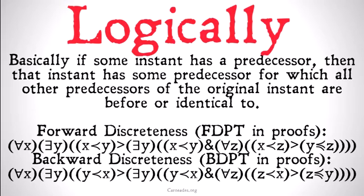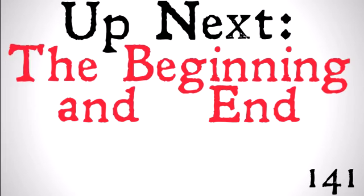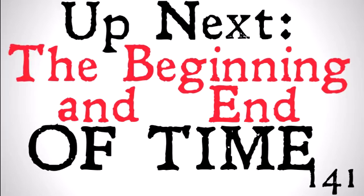Hopefully those logical expressions make sense, or at least the basic ideas make sense. These are going to be very similar to predecessorship and successorship without the stipulation that there must be no end or no beginning. Up next, we've already started talking about the beginning and end of time — we're going to get some nice, clear properties that can define whether time has a beginning or time has an end.